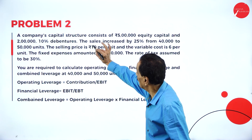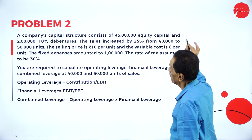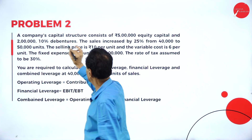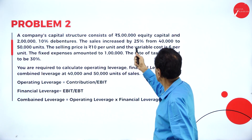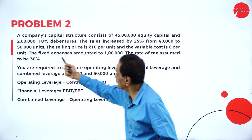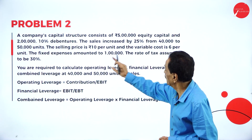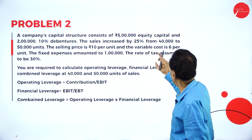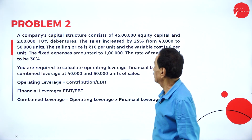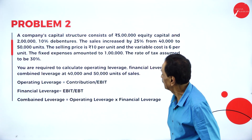A company's capital structure consists of 5 lakh equity capital and 2 lakh 10% debenture. Sales increased by 25% from 40,000 to 50,000 units. Selling price is rupees 10 per unit, variable cost is rupees 6 per unit. Fixed expenses amount to 1 lakh. Rate of tax is 30%.